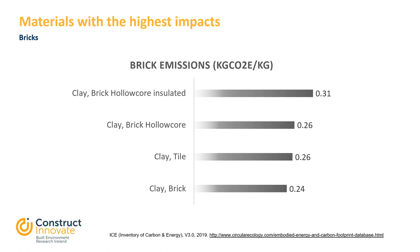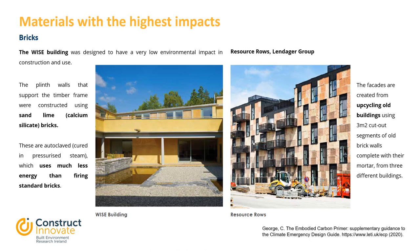The figure shows the emissions of different types of bricks in kg of CO2e per kg of brick, varying from 0.24 to 0.31 kg of CO2 per kg. Two case studies were designed and constructed to have a very low environmental impact. In the first case, the WISE building, the plinth walls supporting the timber frame were constructed using sand-lime calcium silicate bricks — autoclaved with pressurised steam, which is much less energy intensive than firing standard bricks. In the second case, Resource Rows, the facades were created by upcycling old buildings using three square metre cut-out segments of old brick walls complete with mortar from three different buildings.